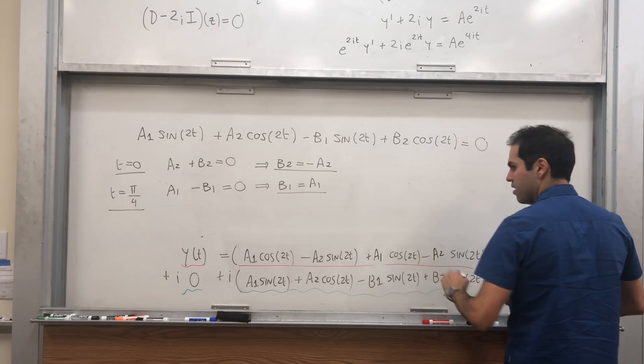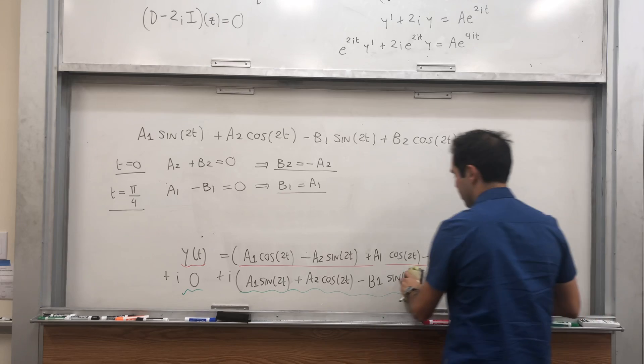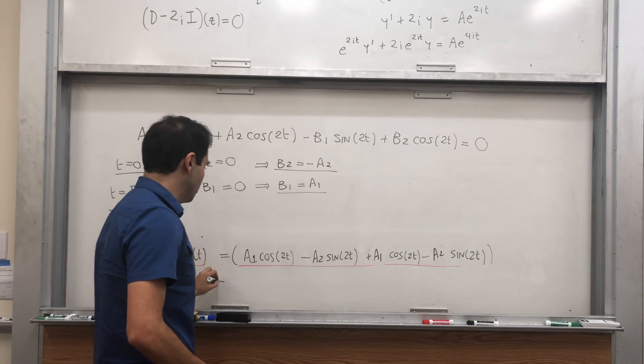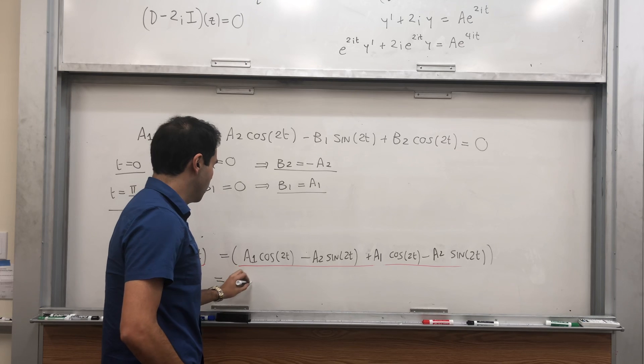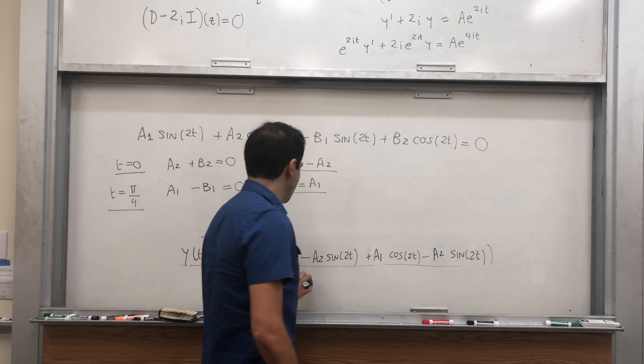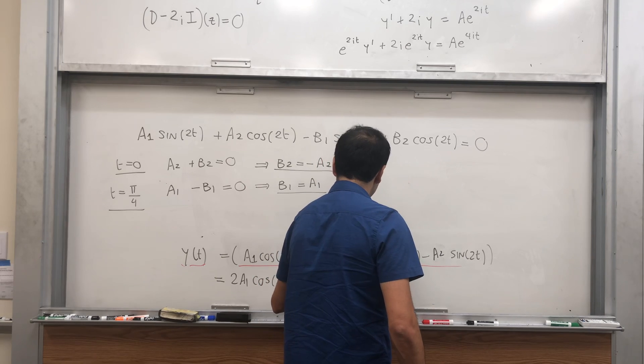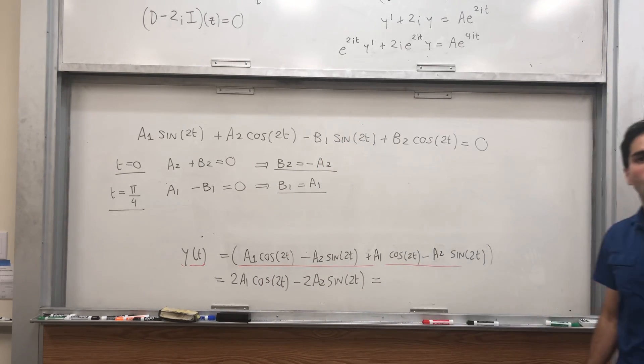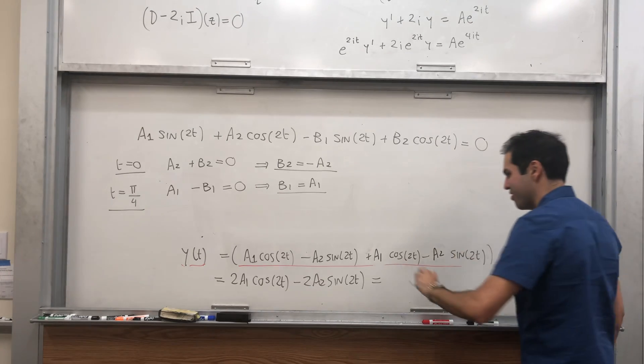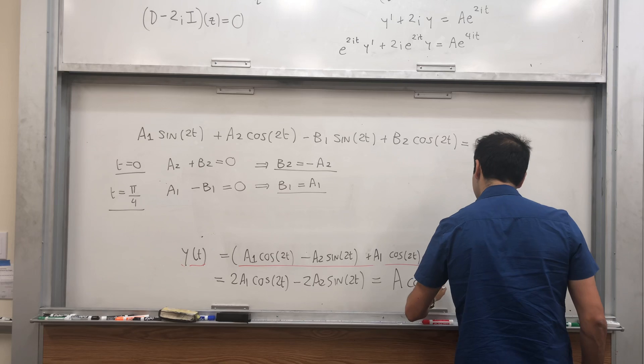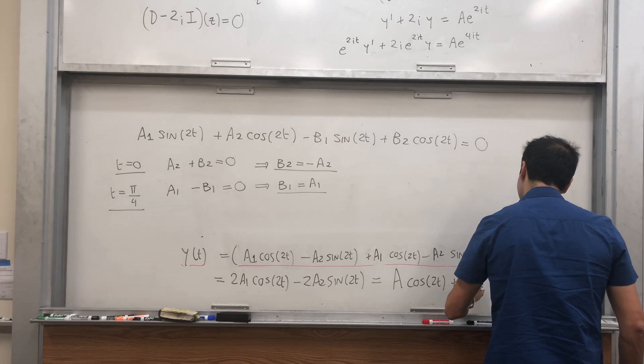And then, if you just gather all the terms, what we really get is 2a1 cosine of 2t and then minus 2a2 sine of 2t. But remember, a1 and a2 are arbitrary real numbers, so just rewrite everything, and we get A cosine of 2t plus B sine of 2t.